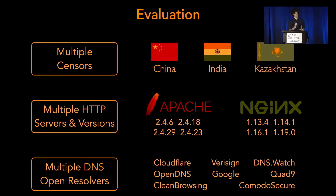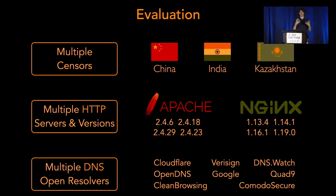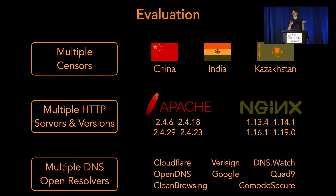We train against real-world censors in China, India, and Kazakhstan. The game is to evade the censor — make it think the HTTP is invalid — but have the end server treat it as a valid request. We train against specific servers because different servers accept different sorts of requests. For DNS, these are the open resolvers we use.